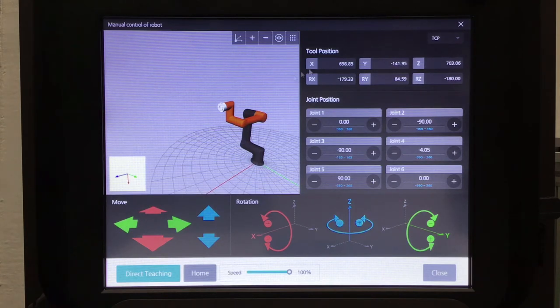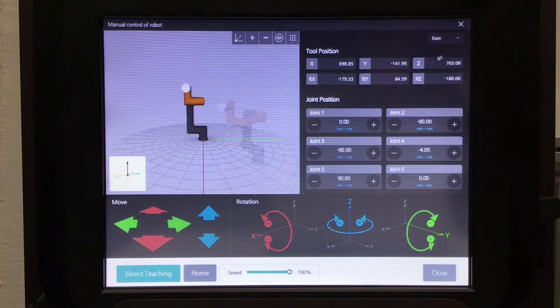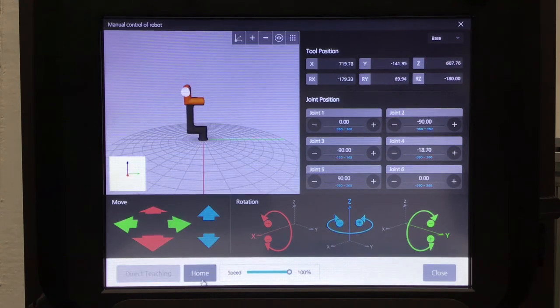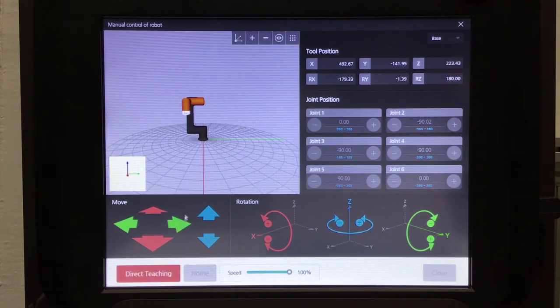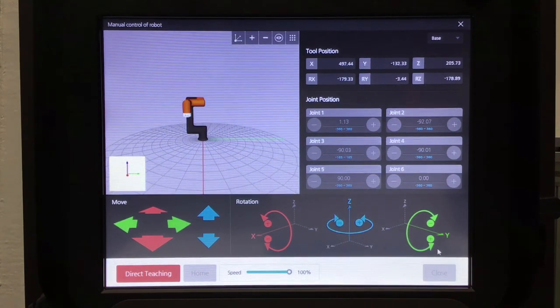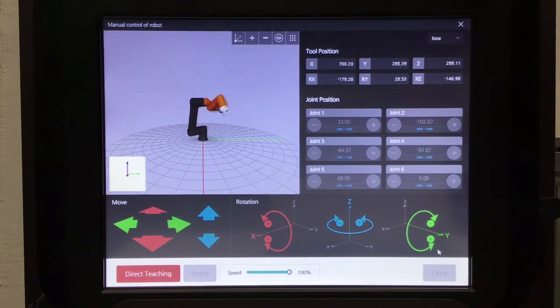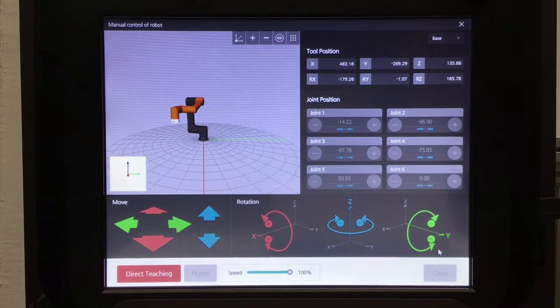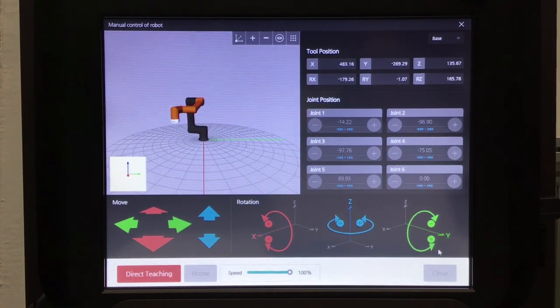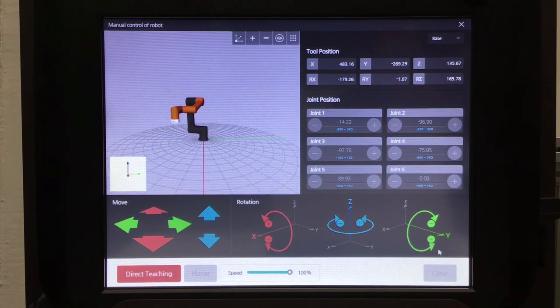So the only other thing on this page that we haven't talked about is the direct teaching button. Direct teaching allows you to grasp the robot with your hands and move it however you please. So you click the direct teaching button, it will highlight red. You cannot click on anything else on the screen anymore. I will now reach up and show you guys with my hands how you can move it around, left, right, up and down, around, however you want. It's very simple, very easy. Helps with those precise movements when programming.